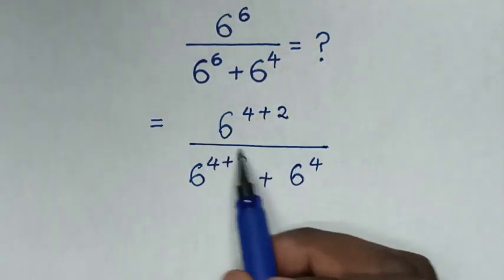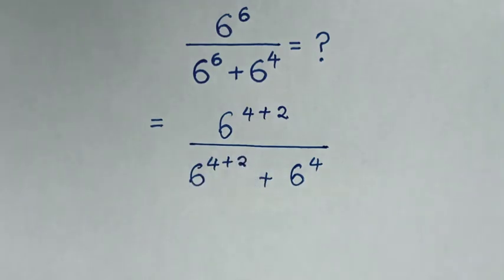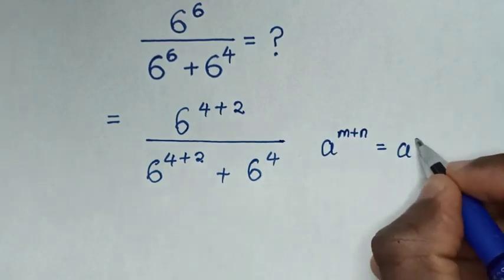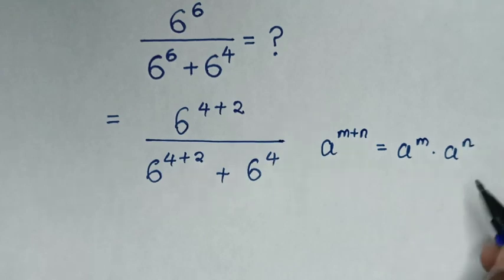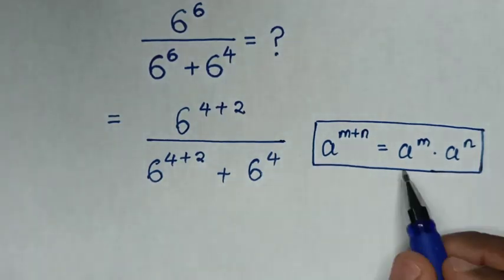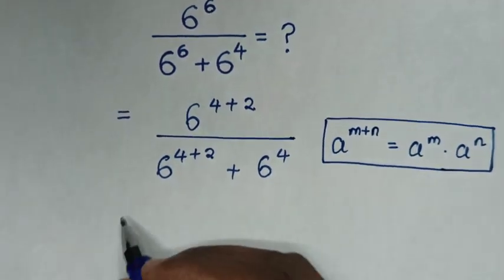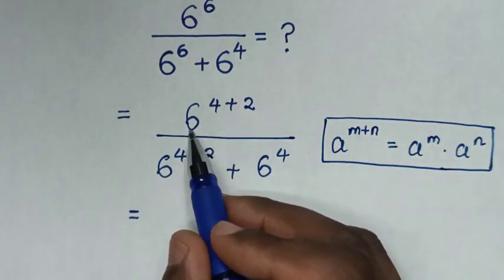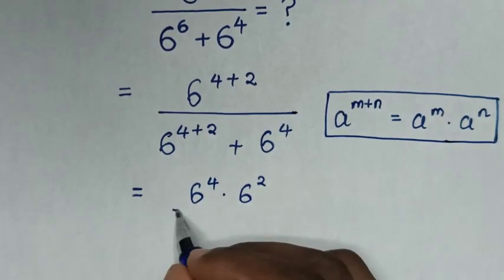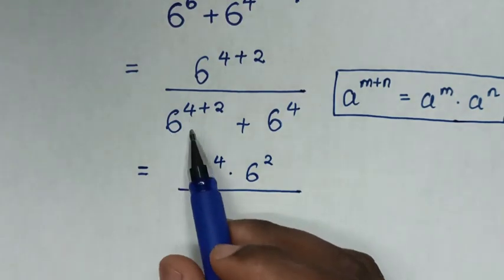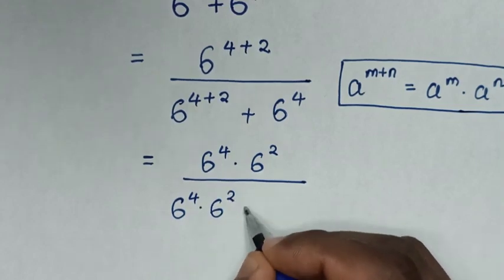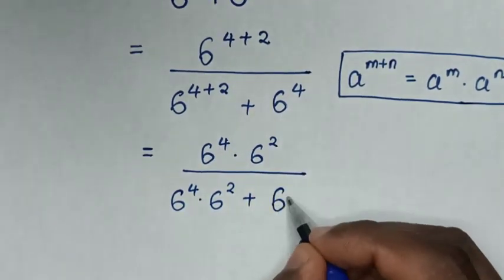Then in the next step, from here and here, we'll apply the exponential rule that a power of m plus n is equal to a power of m times a power of n. So it will be multiplication of exponents. Then it will be equal to 6 power of 4 times 6 power of 2, over 6 power of 4 times 6 power of 2, then plus this 6 power of 4.